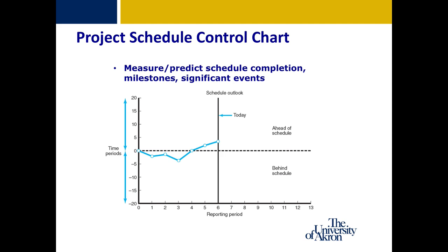The textbook mentions this type of graph is particularly effective with project milestone events. Project milestones are significant events that have no duration associated with them. Some examples include a project approval step, the requirement sign-off step, and the approval to go live with a particular project.